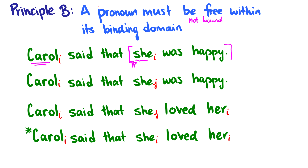What about 'Carol said that she was happy,' where 'she' refers to somebody else in the discourse? Again, 'she was happy' is a TP. 'She' is not bound within its binding domain — in fact, it's not bound at all, because it's not co-indexed with anything. Therefore, this sentence is also okay.